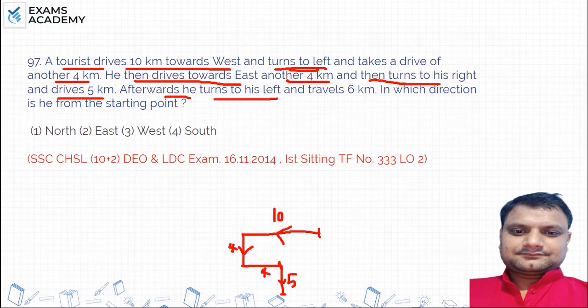Afterward he turns to his left and drives 6 km. After that, he goes to left and takes 6 km. So, he goes to here and takes 10 km. Because this was 4 km. And on top is 10 km.